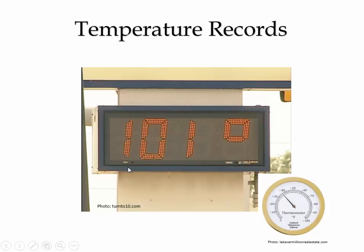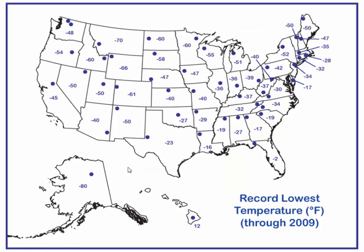Looking at temperature records — the record lowest temperature in New Mexico was minus 50. You can see that all across the country there are extreme events, even in Arizona minus 40. In Florida, minus two Fahrenheit is very extreme cold. Even in Alaska and Hawaii — that's likely the Mauna Loa Observatory.